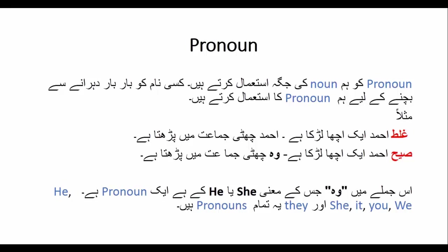مثال کے طور پر ایک چھوٹا سا پیراگراف دیکھتے ہیں۔ غلط طریقہ: 'احمد ایک اچھا لڑکا ہے، احمد چھٹی جماعت میں پڑھتا ہے۔' صحیح طریقہ: 'احمد ایک اچھا لڑکا ہے، وہ چھٹی جماعت میں پڑھتا ہے۔' پہلا طریقہ غلط ہے کیونکہ بار بار احمد دہرایا جا رہا ہے۔ اردو میں بھی ہم اس طرح نہیں کرتے بلکہ اس کی جگہ 'وہ' کا لفظ استعمال کرتے ہیں۔